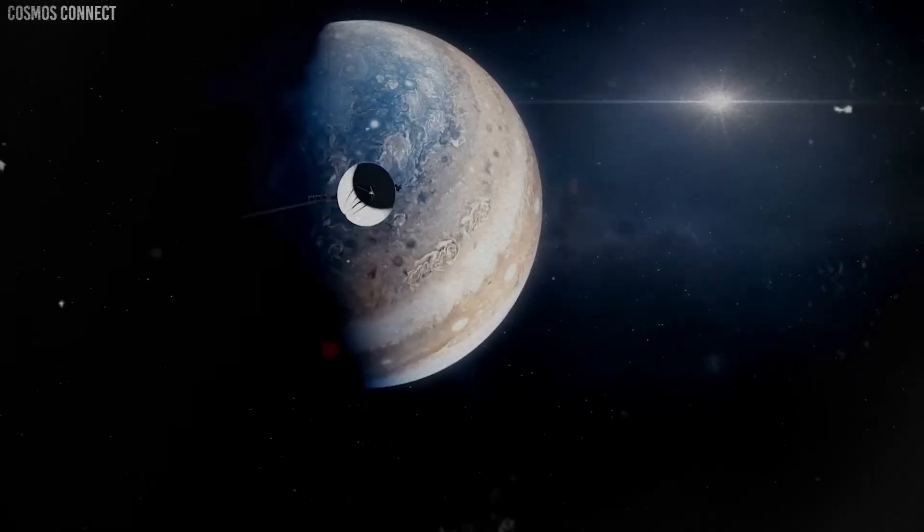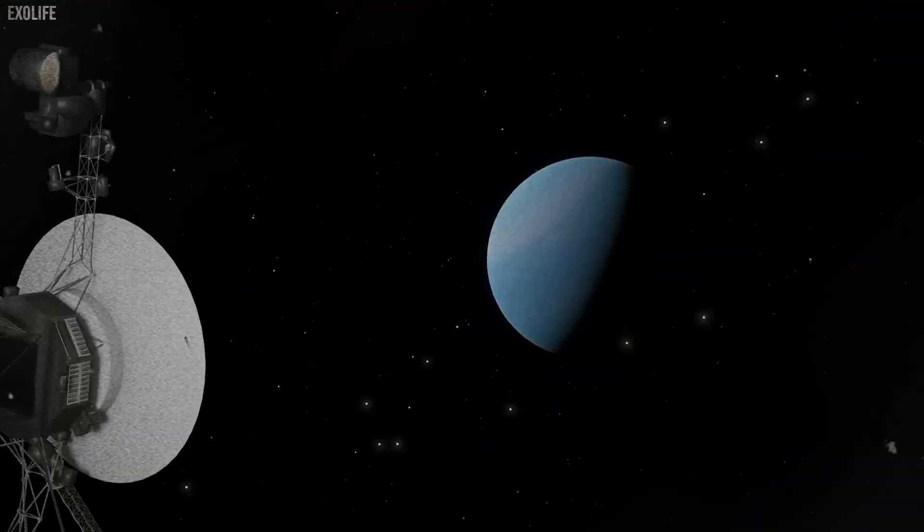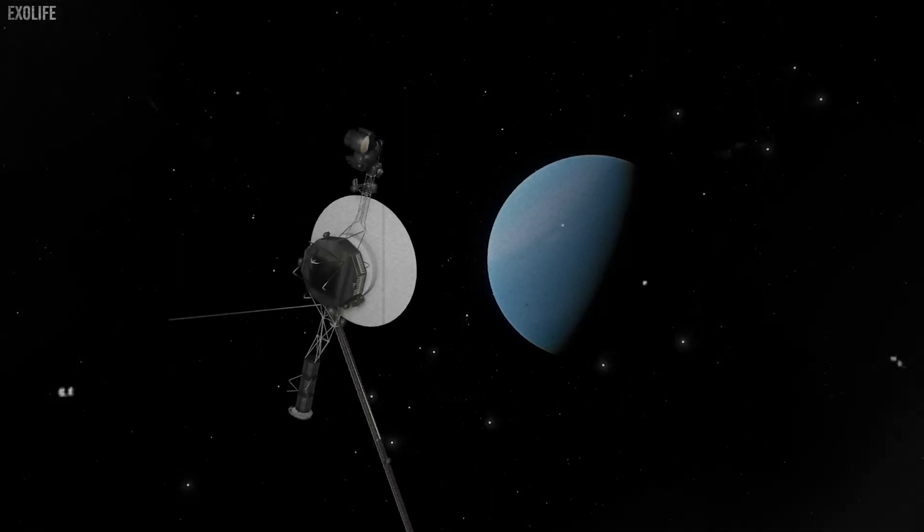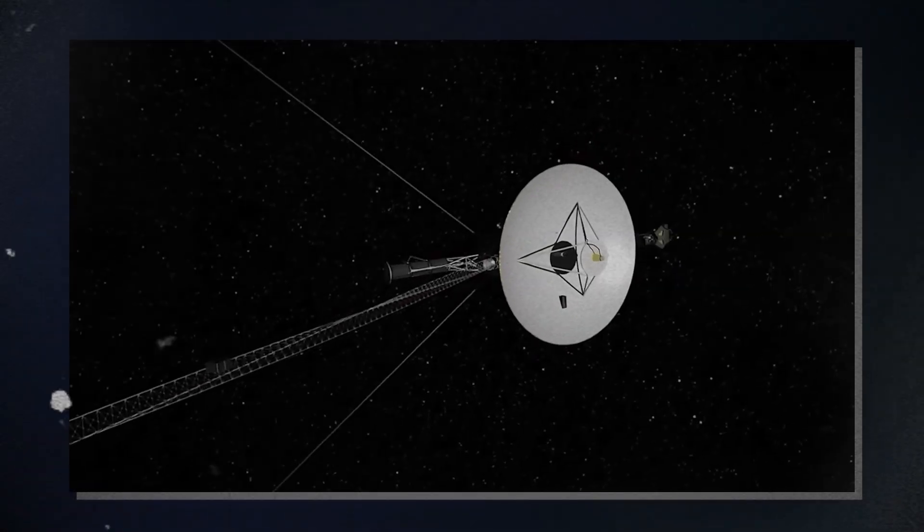That speed difference may not seem huge, just 0.9 miles per second. But imagine riding on the slower spacecraft as the faster one passes by. In just one second, Voyager 1 would be 0.9 miles ahead.